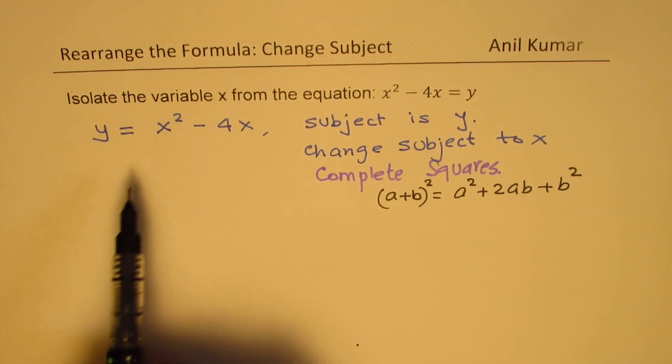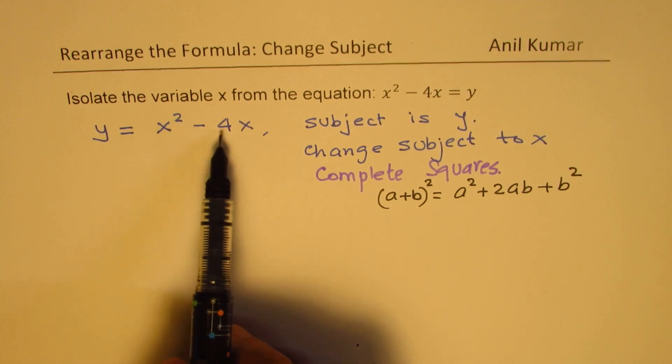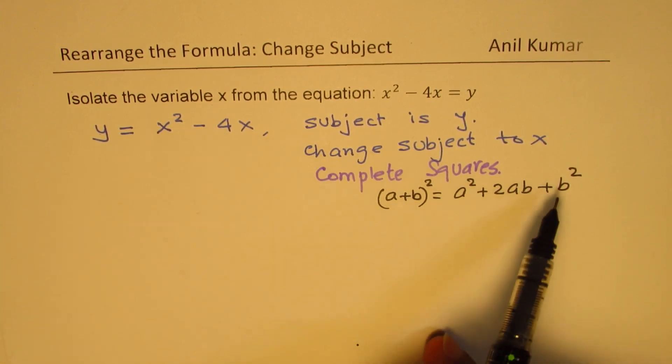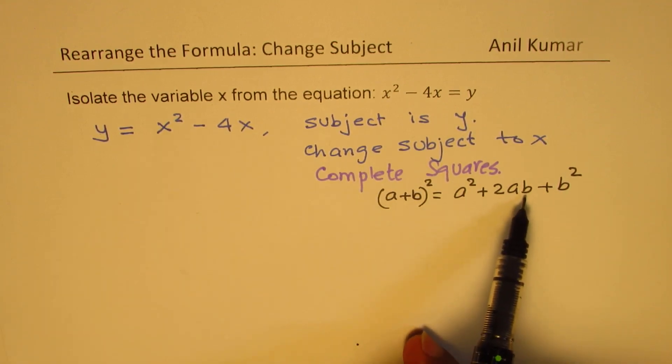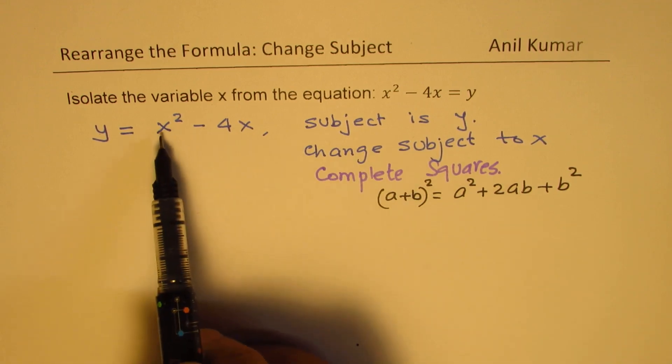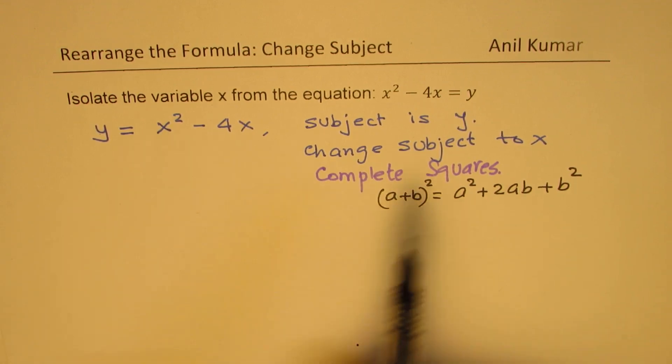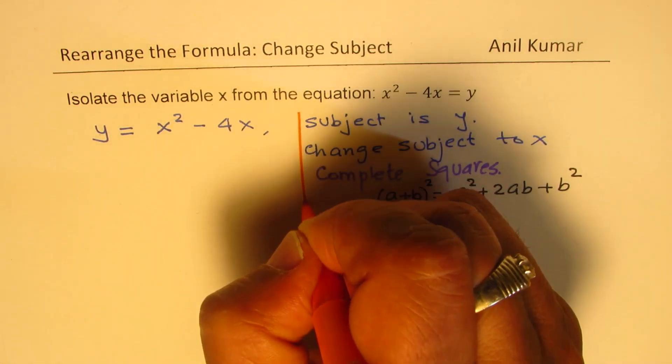In the given expression on the right, we have x squared minus 4x. If I do half of 4 and square it, I can get b squared term, and that half of 4 will be b for me. x being replaced by a. So that is the strategy which we are going to adopt.